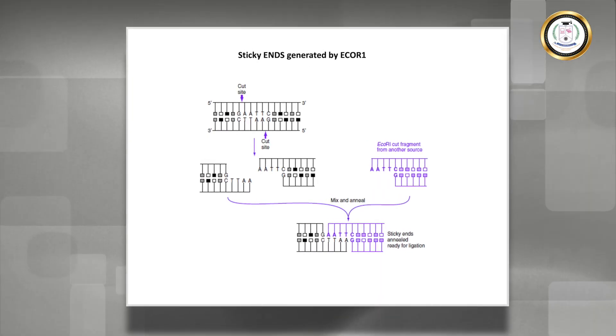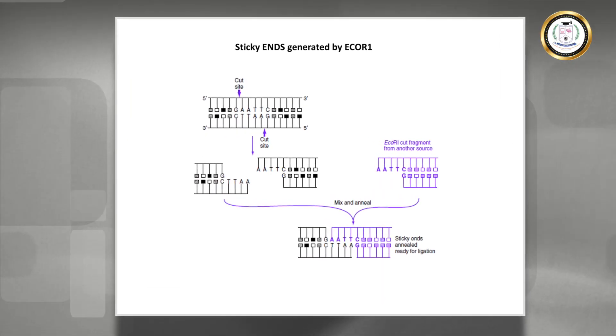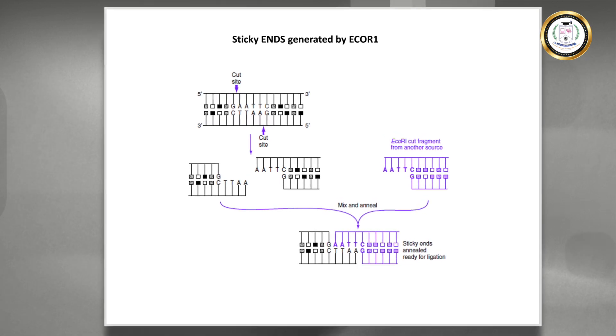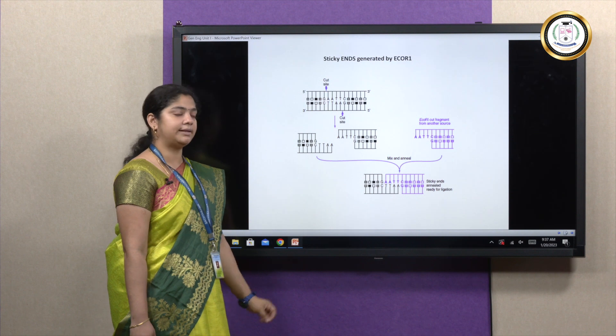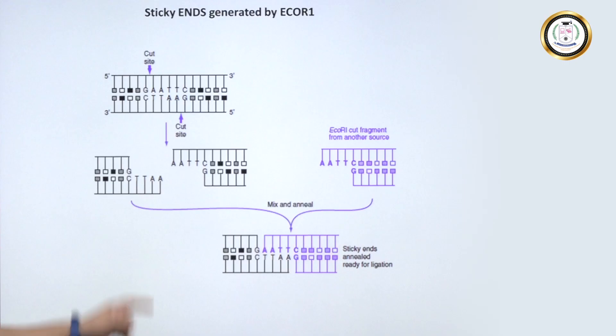Here we can see an example where we can see production of sticky ends using the restriction enzyme EcoR1 where it specifically cuts at GAATTC—this is the target sequence in which it cuts. You can see here the difference and how the end products are obtained by the sticky ends.